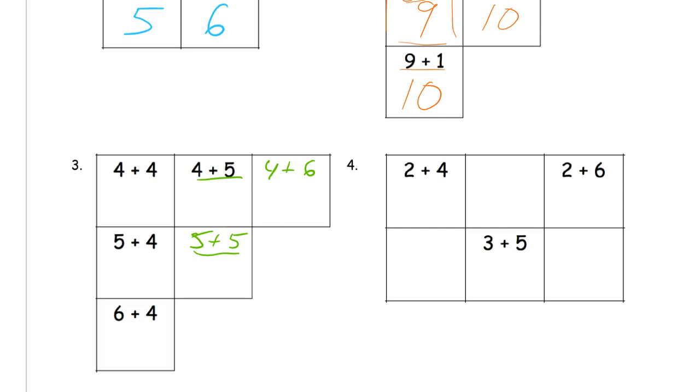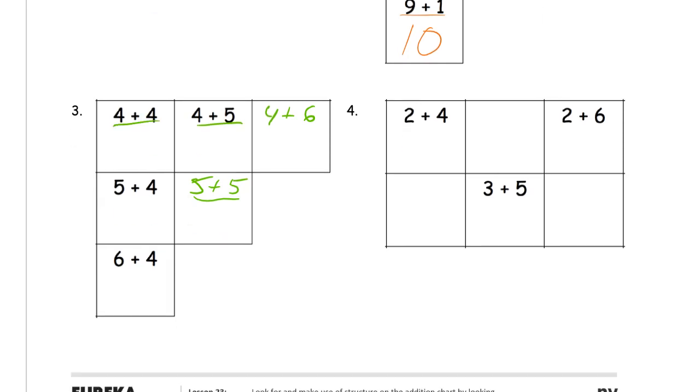And now we can solve all these. 4 plus 4. 4 plus 4 is a double. That's 8. And that's a double plus 1. So that's 9. And this is, that's a 10. 4 plus 6 is one of the ways to make 9. 8, 9, 10. And, you know, we just did 4 plus 5. So this is the same, this is almost the same expression. It's just 5 plus 4. It's the same addends. So it has to have the same total. 9.